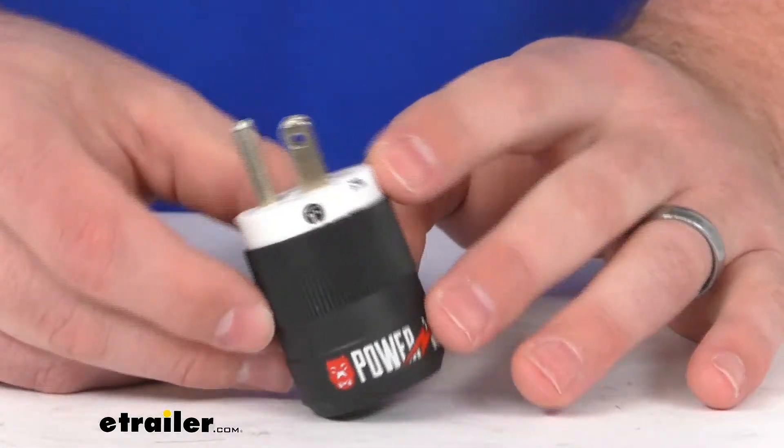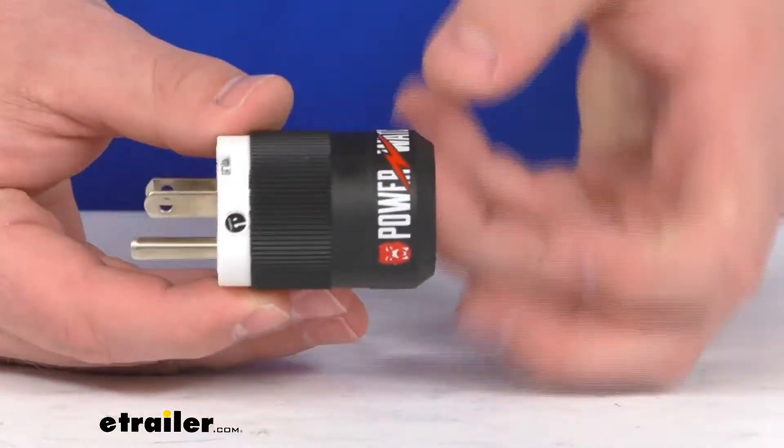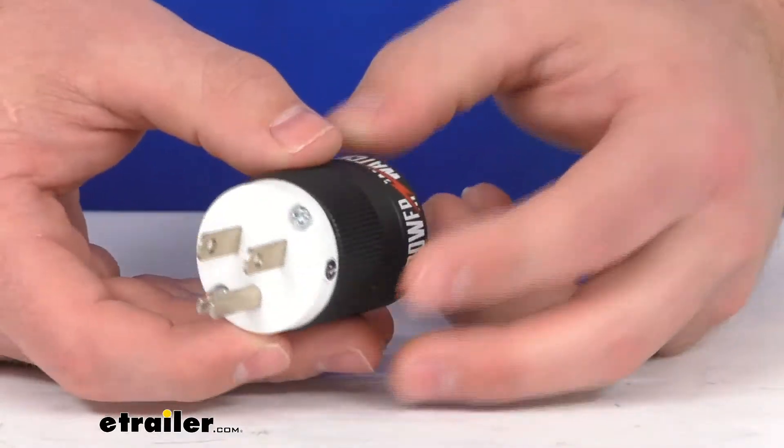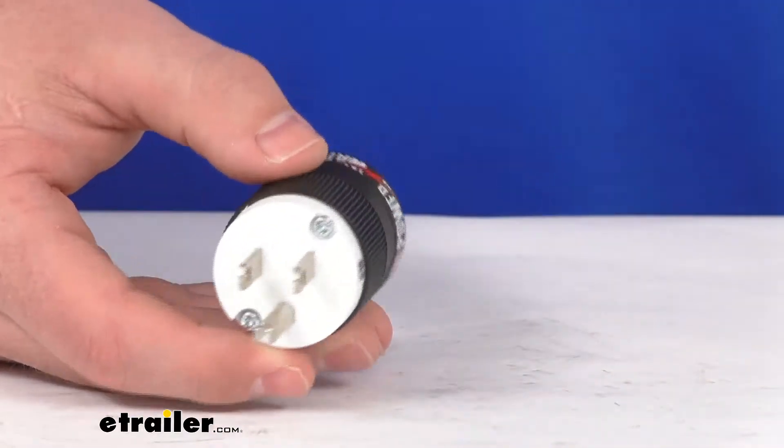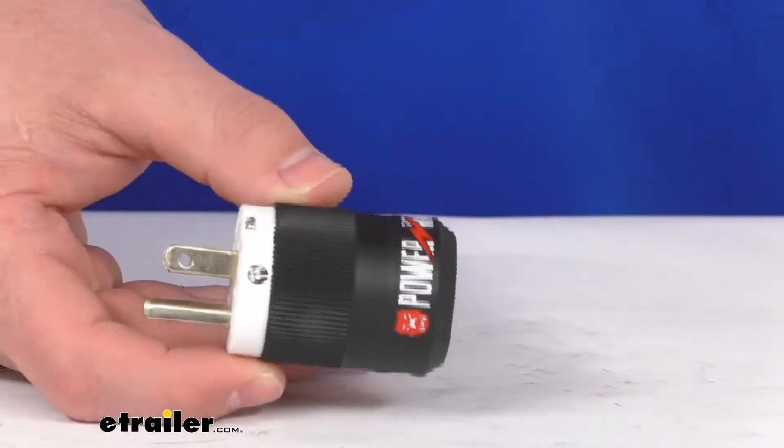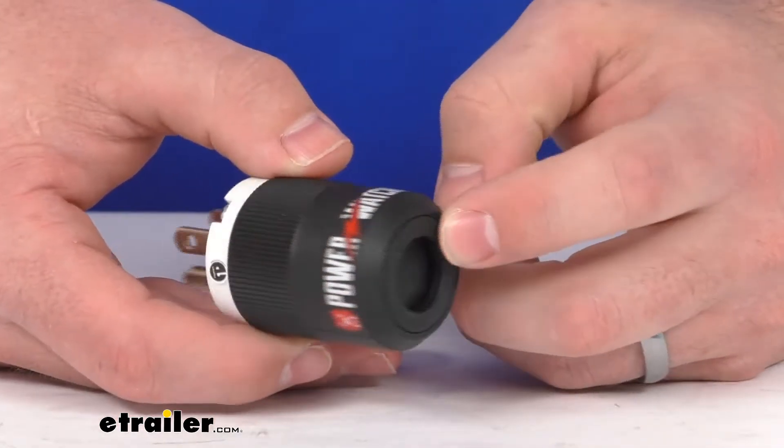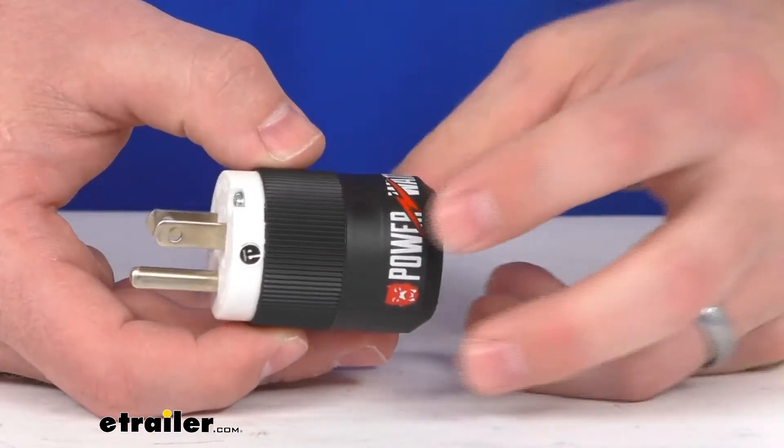This is going to be for your generators that have a floating neutral. This will prevent any of the open ground or open neutral error faults that sometimes result from that floating neutral on your generator.